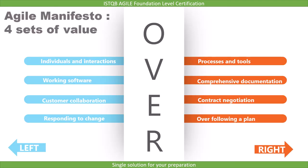So these are the four agile manifesto values covered in this lecture: individuals and interactions over processes and tools; working software over comprehensive documentation; customer collaboration over contract negotiation; responding to change over following a plan. Remember them as they are very important.